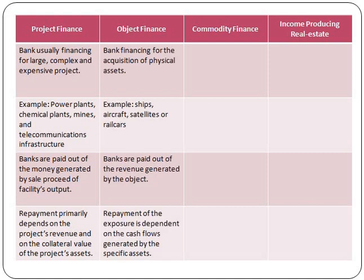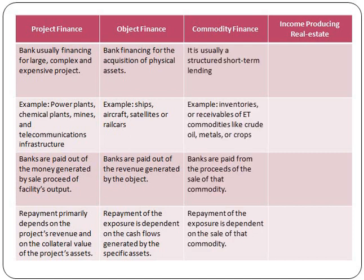Object finance refers to a method of funding for the acquisition of physical assets like ships, aircraft, satellites, and rail cars. Here, repayment of the exposure depends on the cash flow generated by the specific asset that has been financed, such as revenue generated by a ship's business, rather than relying on the credit worthiness of the borrower. On the contrary, if the borrower's financial condition and debt servicing capacity enable repayment without undue reliance on the specific asset, then that exposure will be treated as a collateralized corporate exposure.